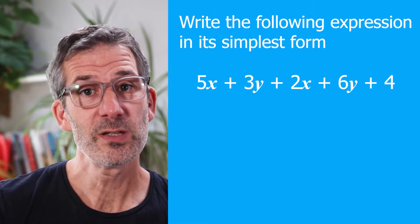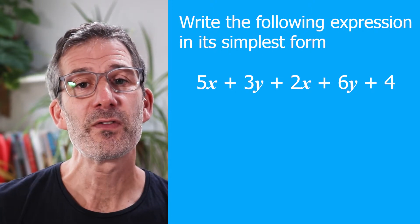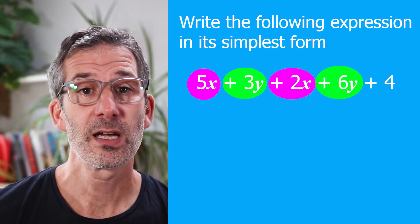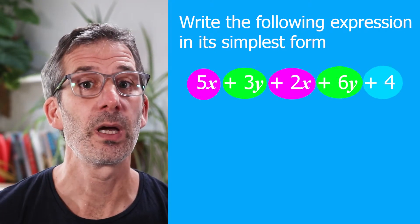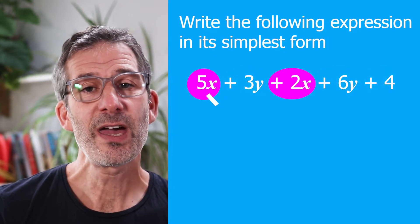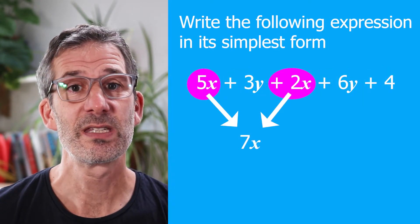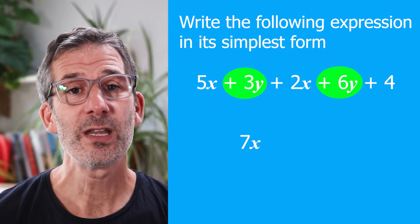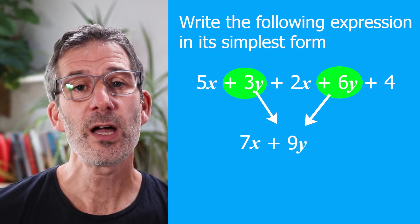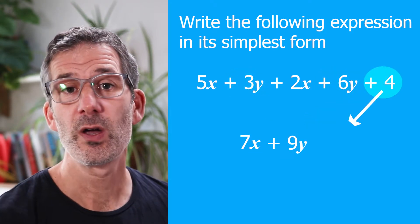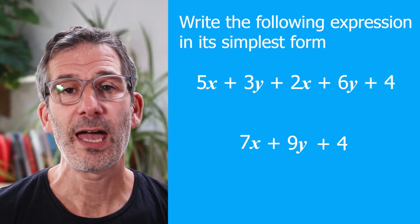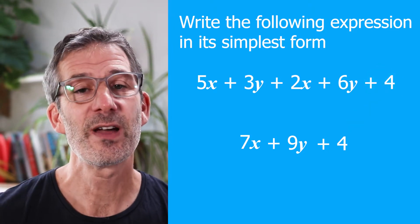This first one is all about gathering like terms. We have terms that contain x's, terms that contain y's, and a term that contains only a number. We start by getting the x's together: 5x + 2x gives us 7x. Then the y's: 3y + 6y is 9y, and then we've got that 4 on its own. So the answer is 7x + 9y + 4, and that's as simplified as we can make it.